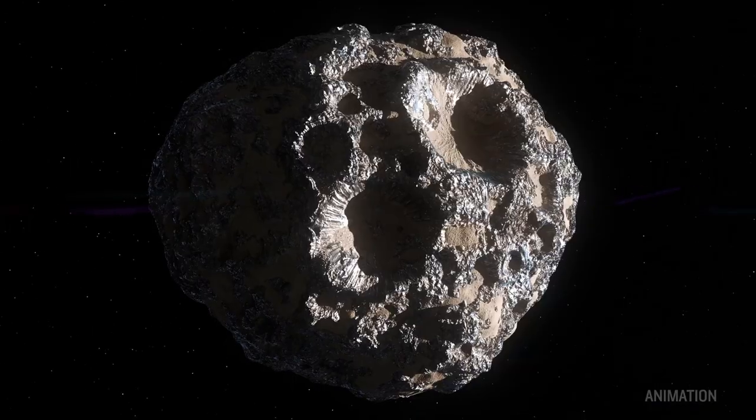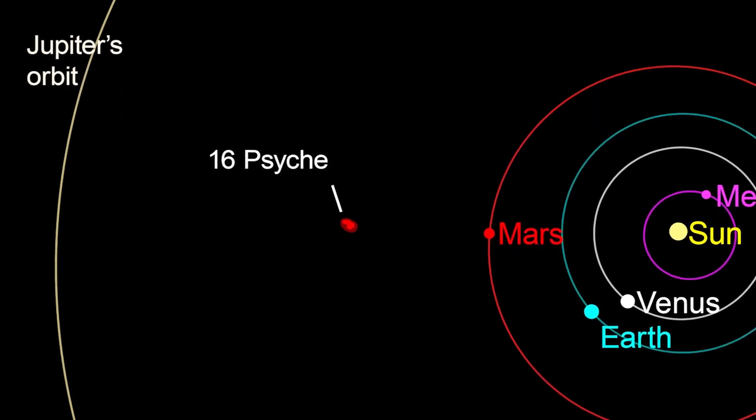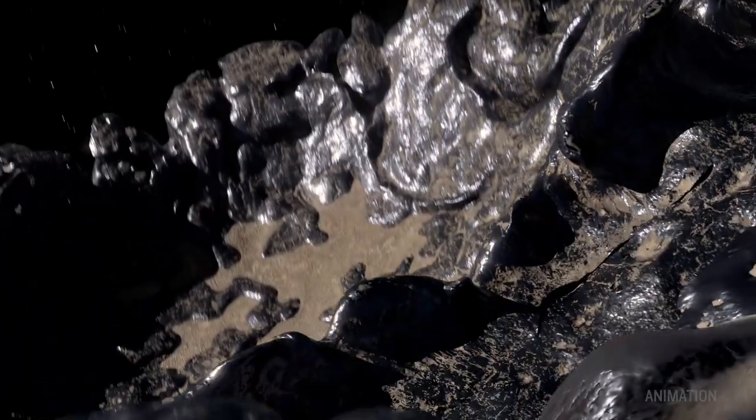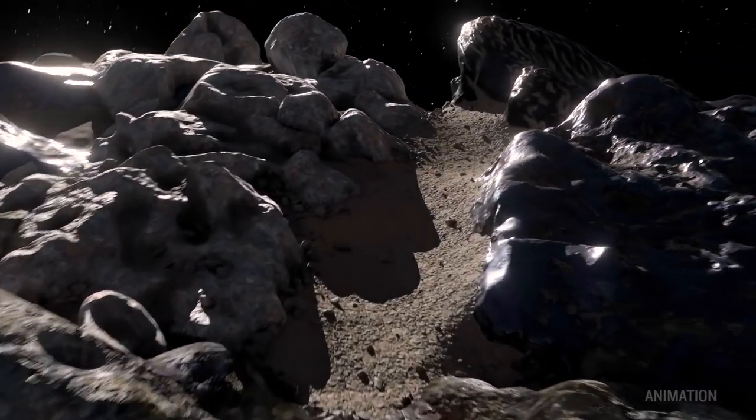There are probably two million asteroids in our solar system. The reason that Psyche is unique is that it is metal rich. It's believed that it may be a remnant core of an early planetesimal.